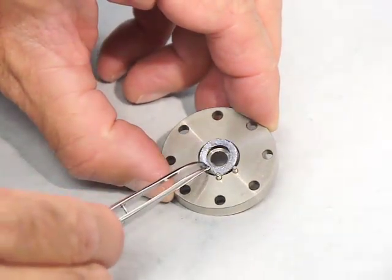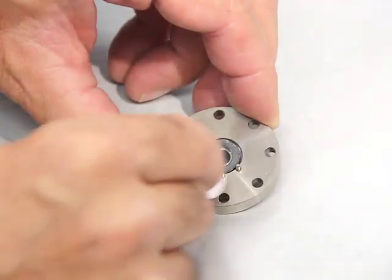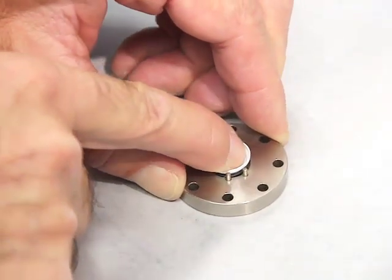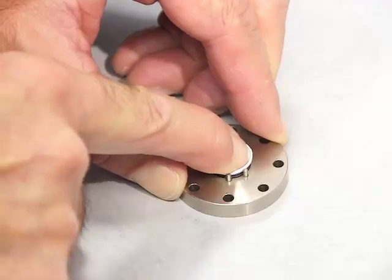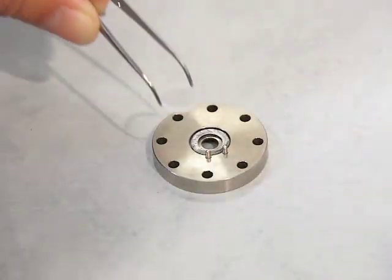Place the new gasket in the end cap and compress it evenly, slightly down below the end cap surface. Position the window in the well.